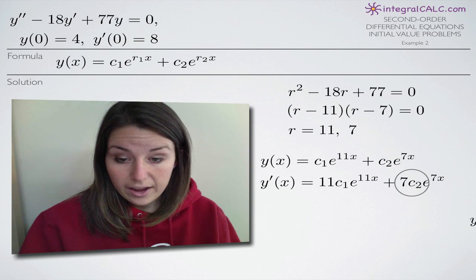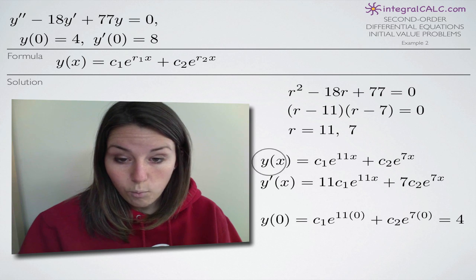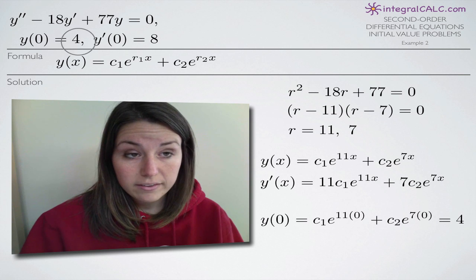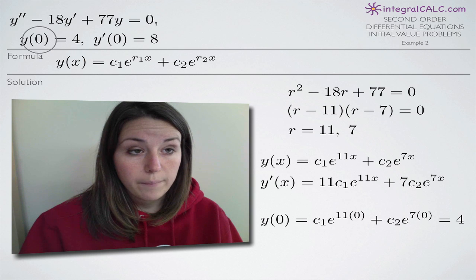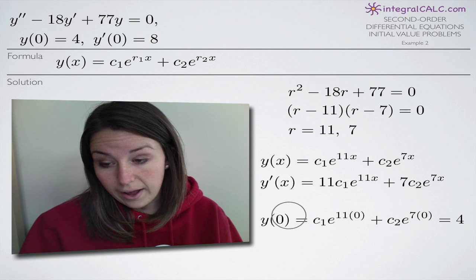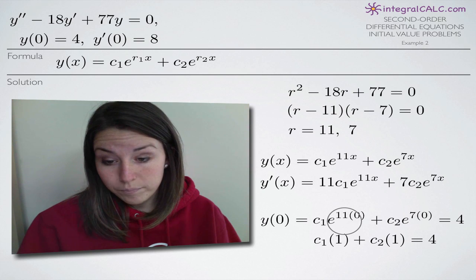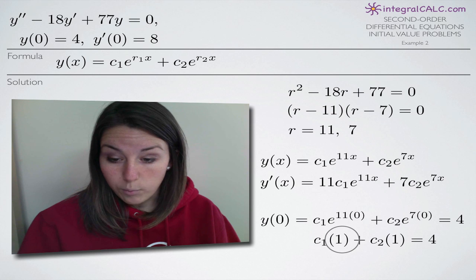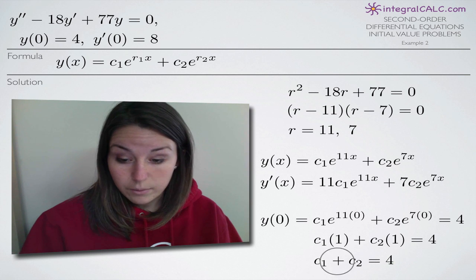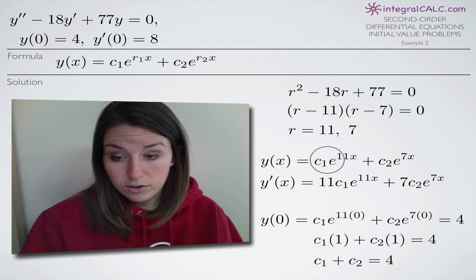Now we need to start using our initial conditions. Plugging in 0 to y of x for our first initial condition y of 0 equals 4, we substitute 0 for x and set it equal to 4. Since anything raised to the 0 power is 1, e to the 0 becomes 1 for both terms. So we end up with the equation c sub 1 plus c sub 2 equals 4. We're going to hold on to this equation because we'll need it later.